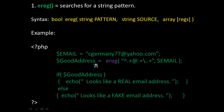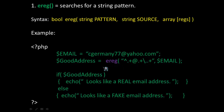The variable 'good_address' stores the result of calling the ereg function. The pattern checks for an at symbol and a dot operator for the domain. Since cgermany778@yahoo.com has an at symbol and a dot for the .com domain, ereg returns true. An if-else then echoes 'looks like a real email address' if true, or 'looks like a fake email address' if the at symbol or dot were missing.